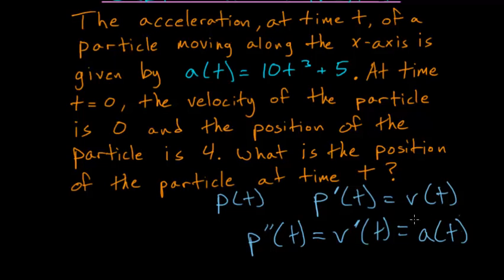Since we're given the acceleration, if we take its antiderivative, or take an indefinite integral, then we can find the velocity function. And once we have the velocity function, we can just take an antiderivative of that and we'll get the position function. So let's start with the acceleration and take an indefinite integral of it.